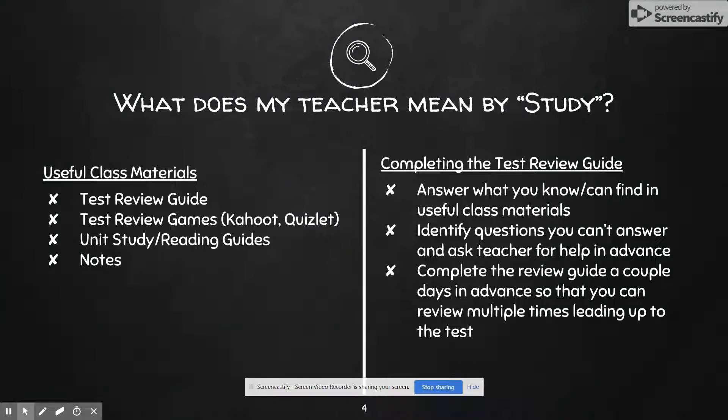When you're going to complete a test review guide, there are just some really big steps to do. First, answer what you know and then what you can find out in your useful class materials. Sometimes I see students hopping on just a Google search to figure out those answers. And the problem is that you may not get the specific answer that you need, or you might get an answer that is correct, but your teacher is not asking you to know that part of it. So I always start with what did I learn in class and remember, and what do my specific notes or review guide say.